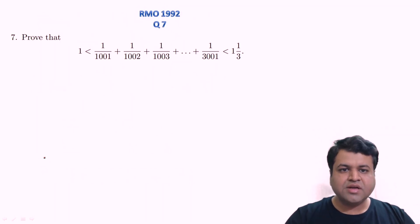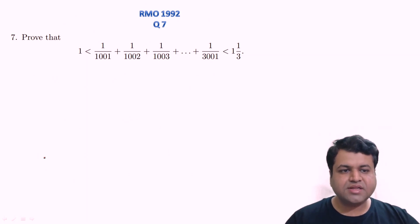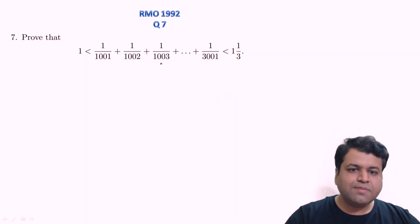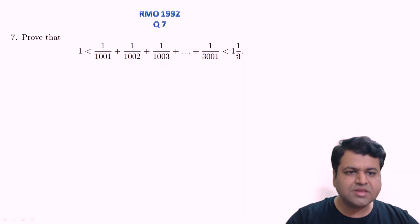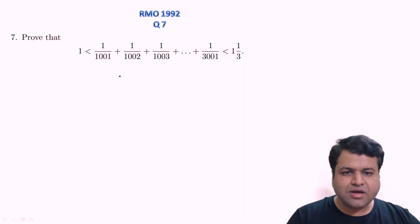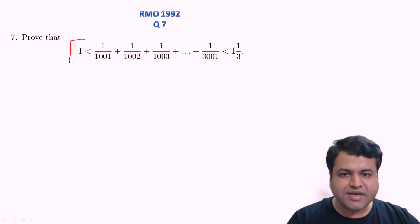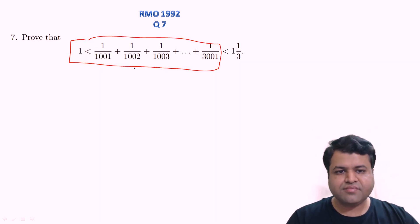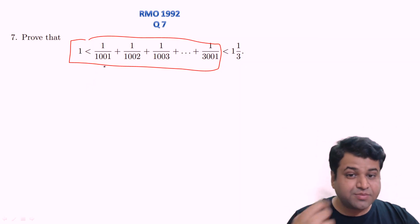Let's start today's session. This is question number 7 of year 1992 — a question of inequality. We need to prove that 1/1001 + 1/1002 + 1/1003 + ... is less than 4/3 but greater than 1. We will divide this into two parts: first prove the sum is greater than 1, then prove it is less than 4/3.